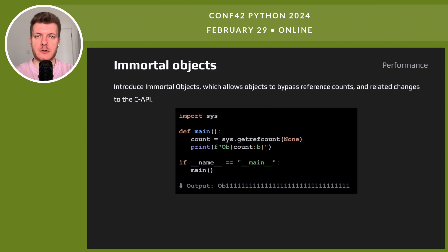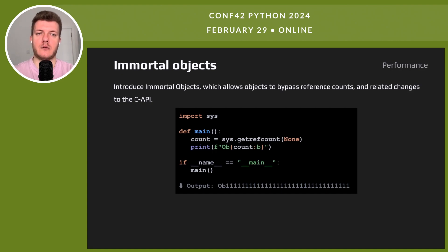PEP 683 introduces the idea of immortal objects — these are special because they don't need reference count tracking. This is good for big apps like Django with many concurrent users, helping them run smoother. In Python, using an object normally means it gets reference-counted, which can slow things down. With immortal objects this counting doesn't happen, keeping things fast. Still, this feature is only useful for a relatively small number of Python projects.